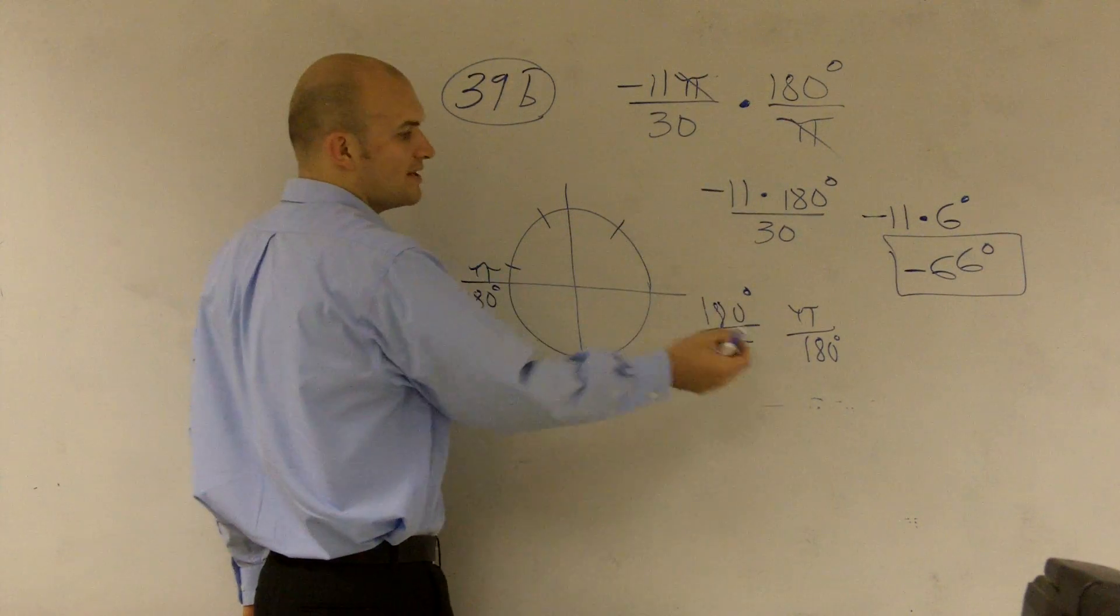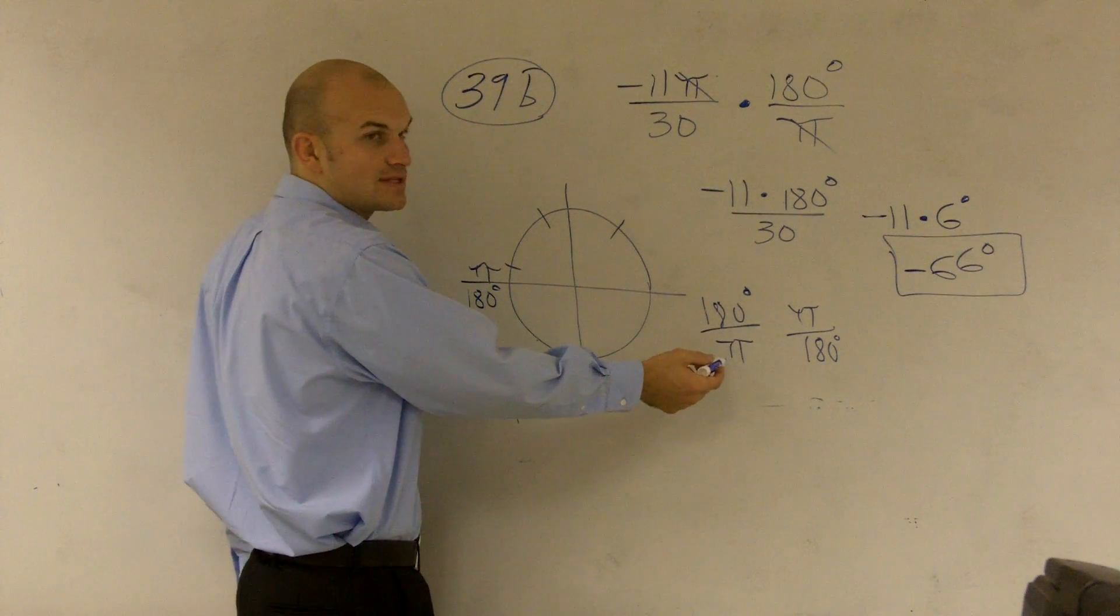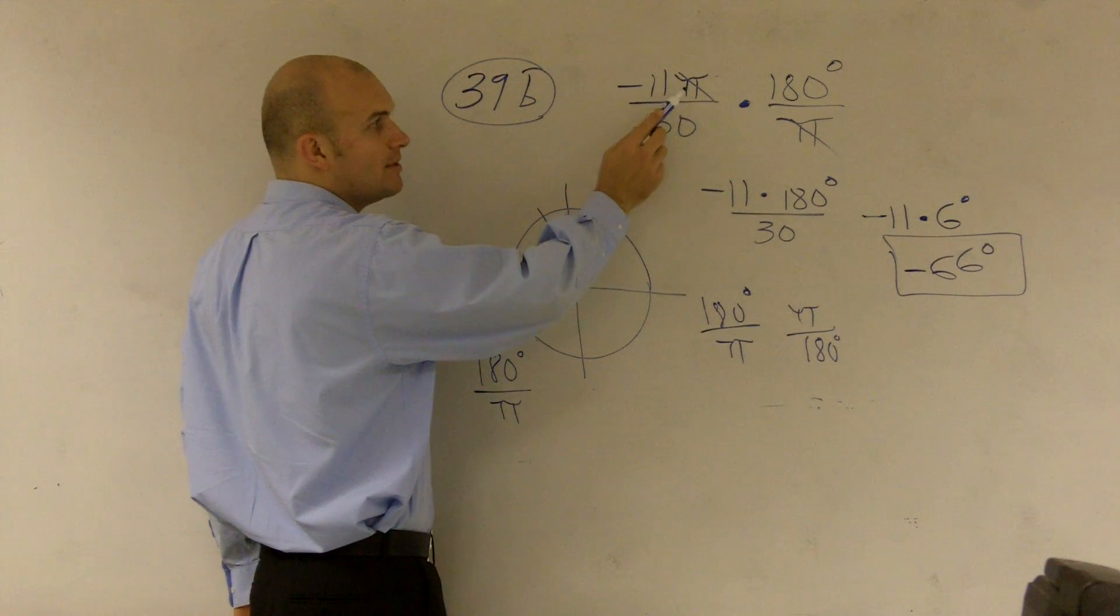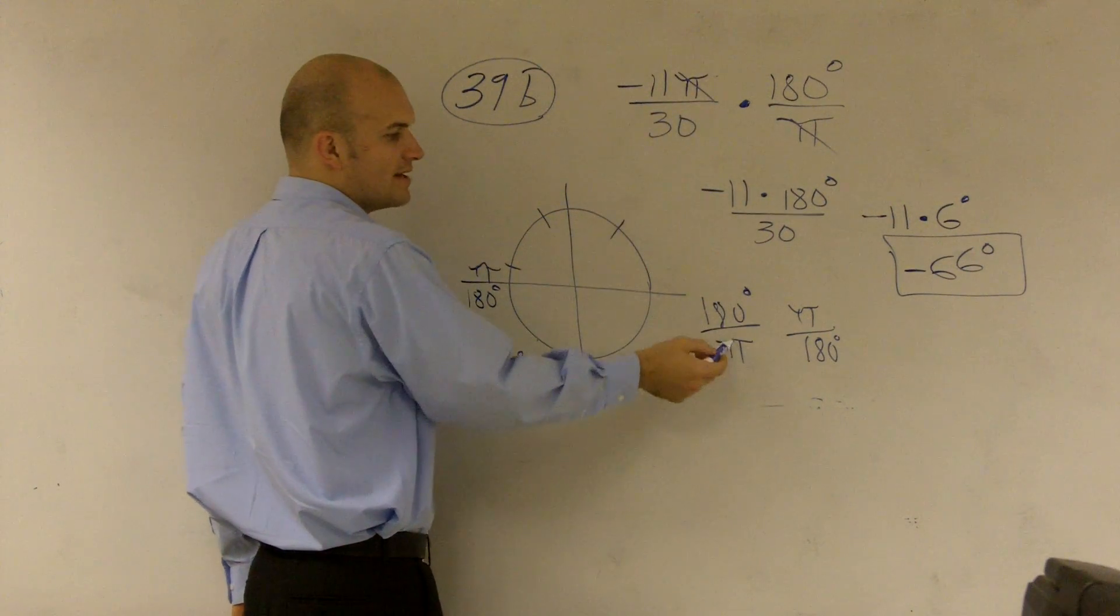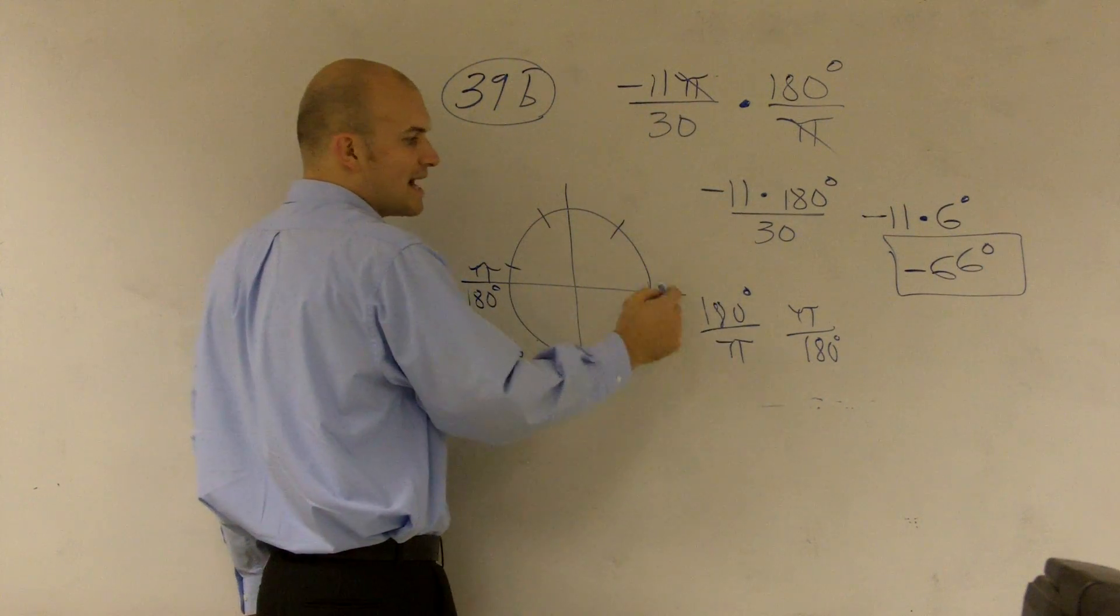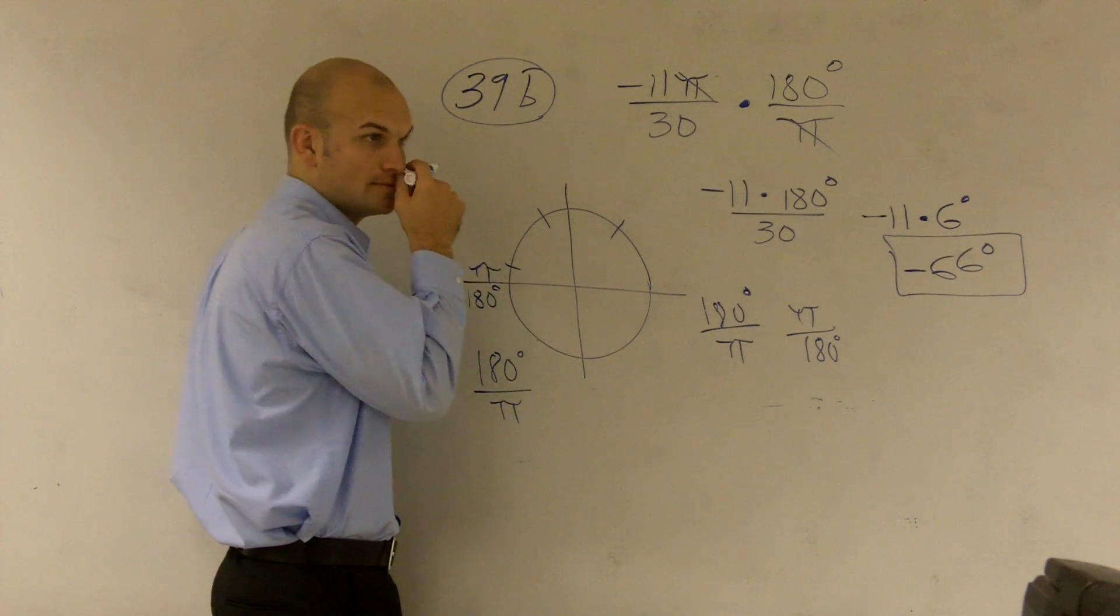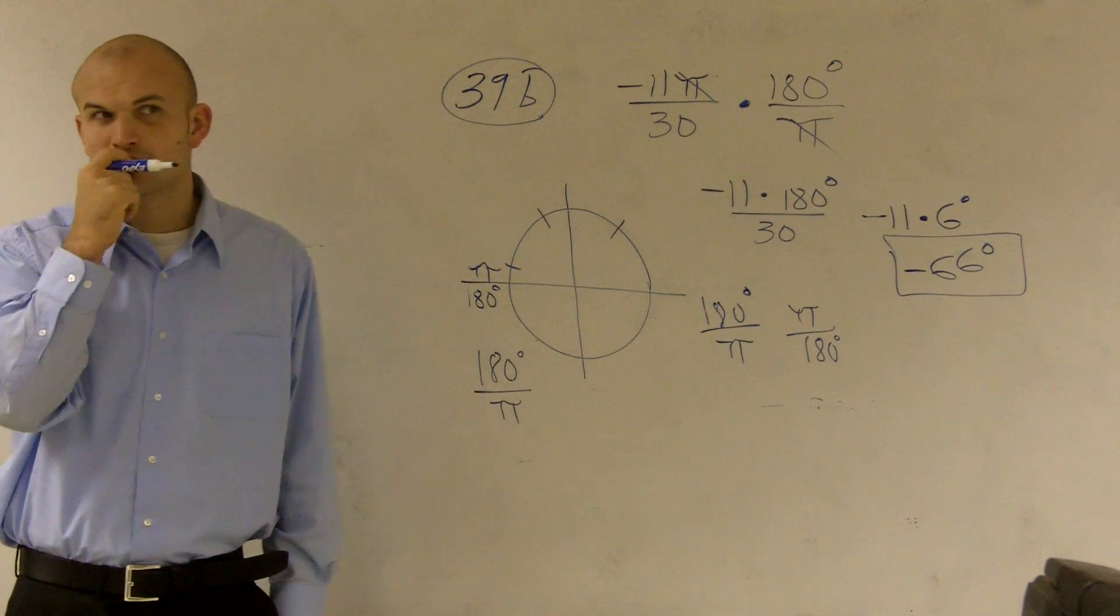So therefore, whenever I'm solving for this, whatever I want to get rid of, that's what's going to be on the denominator. So if I want to go from radians to degrees, I'm going to make sure that my degrees is on top, so my radians will cancel out. Does that make sense? Kind of.